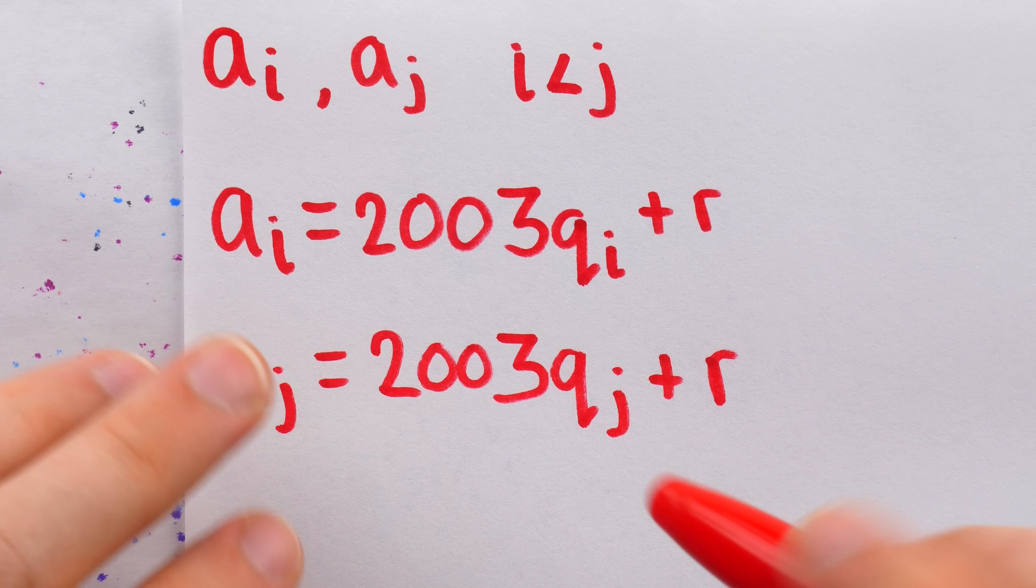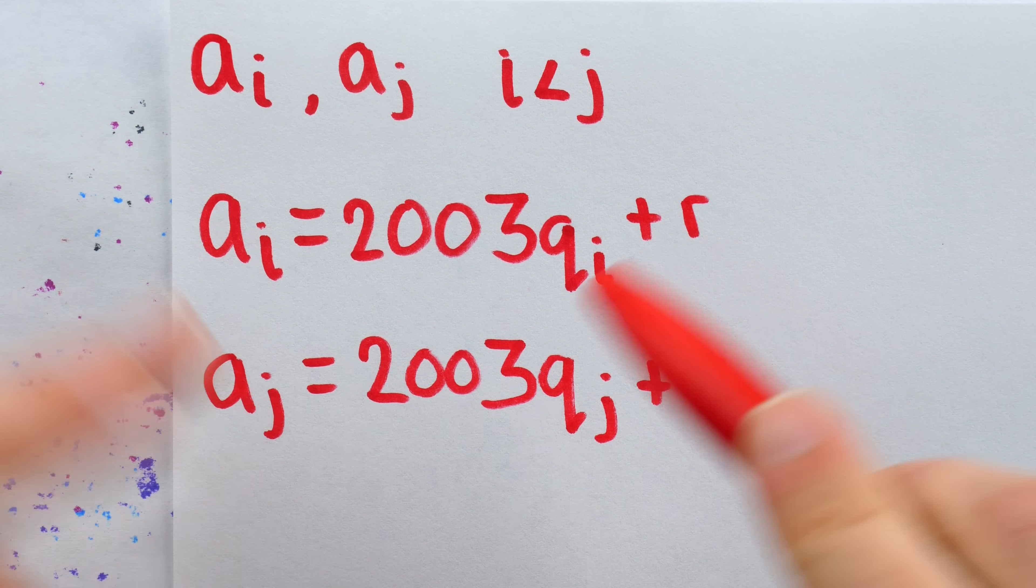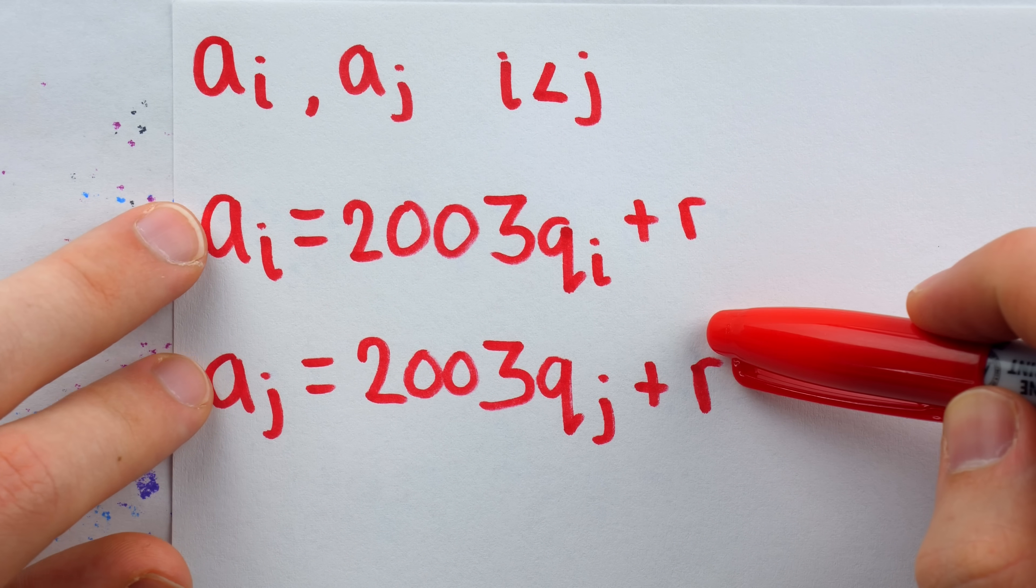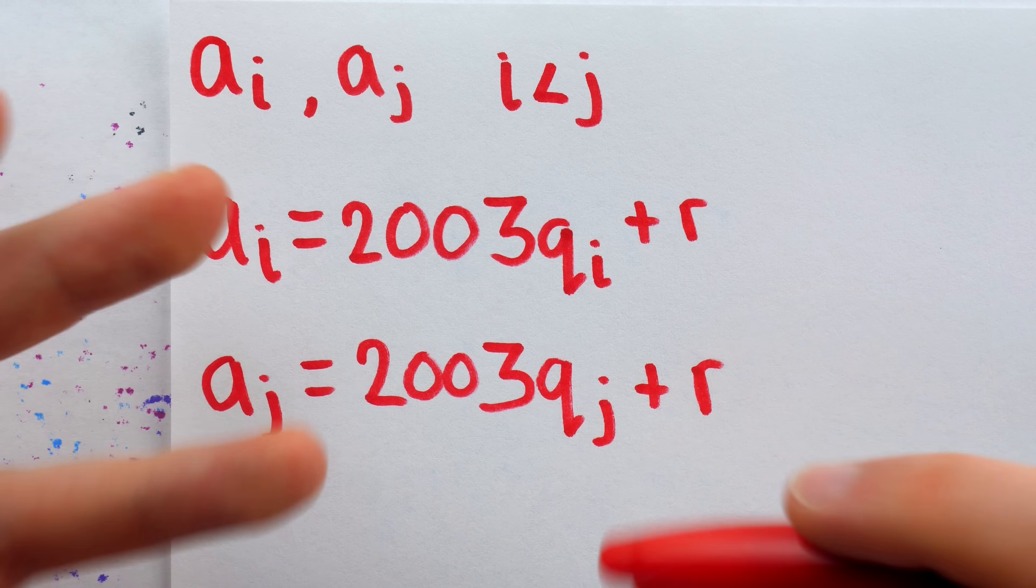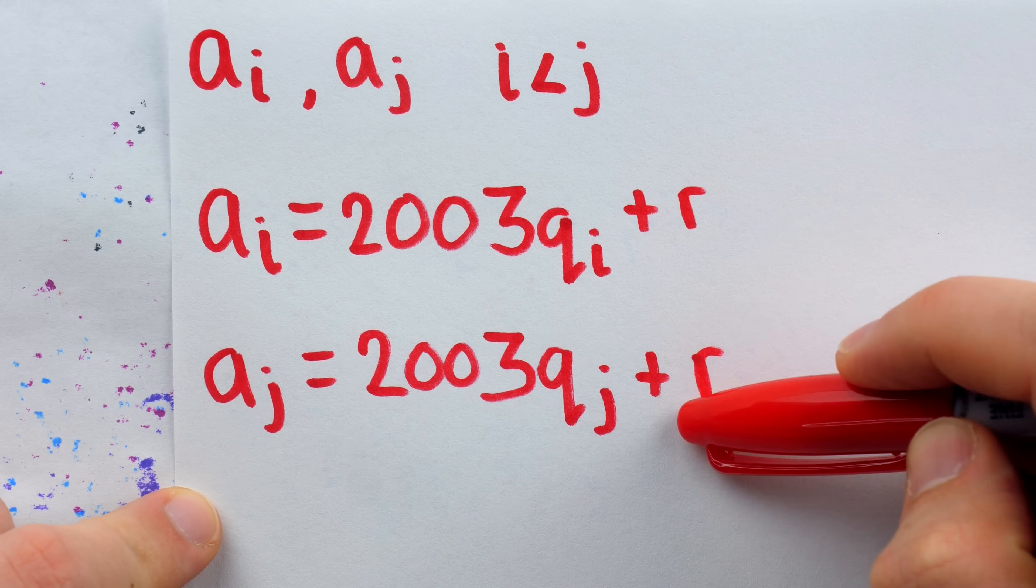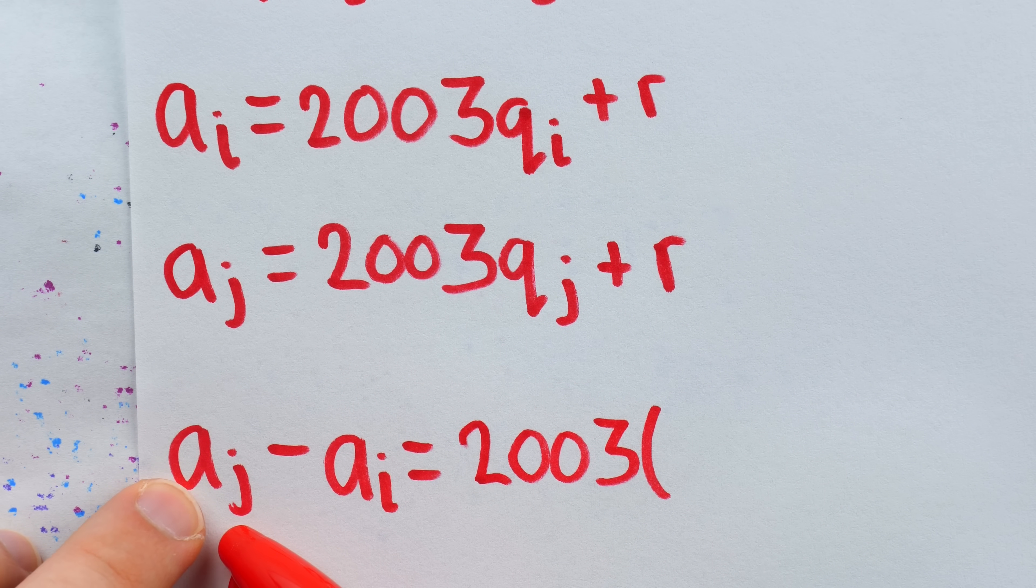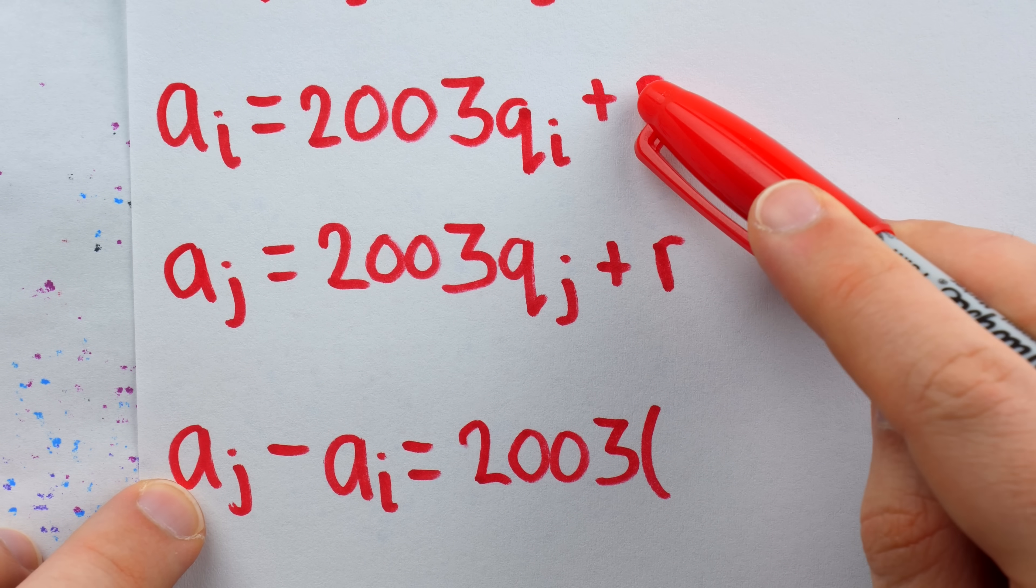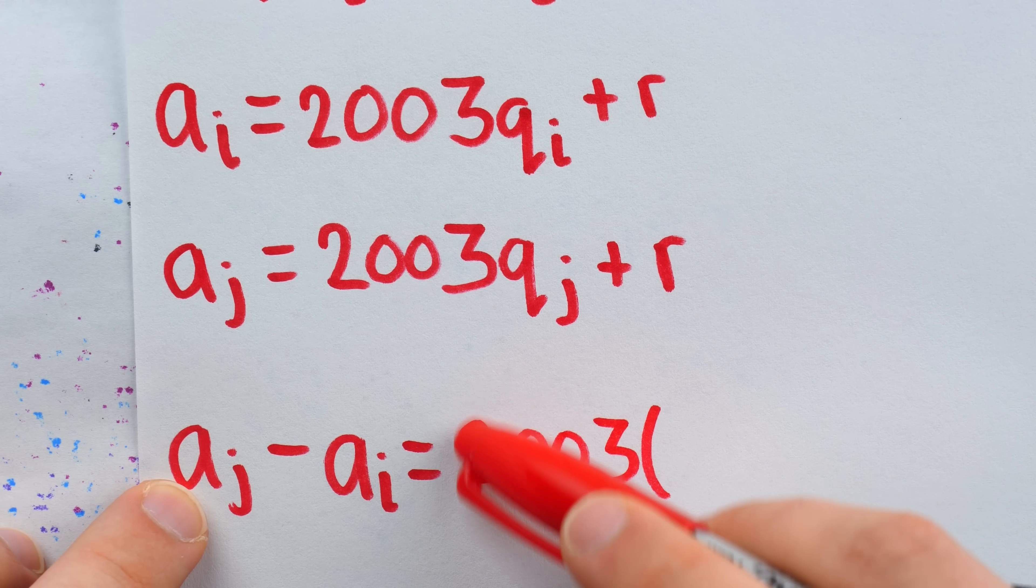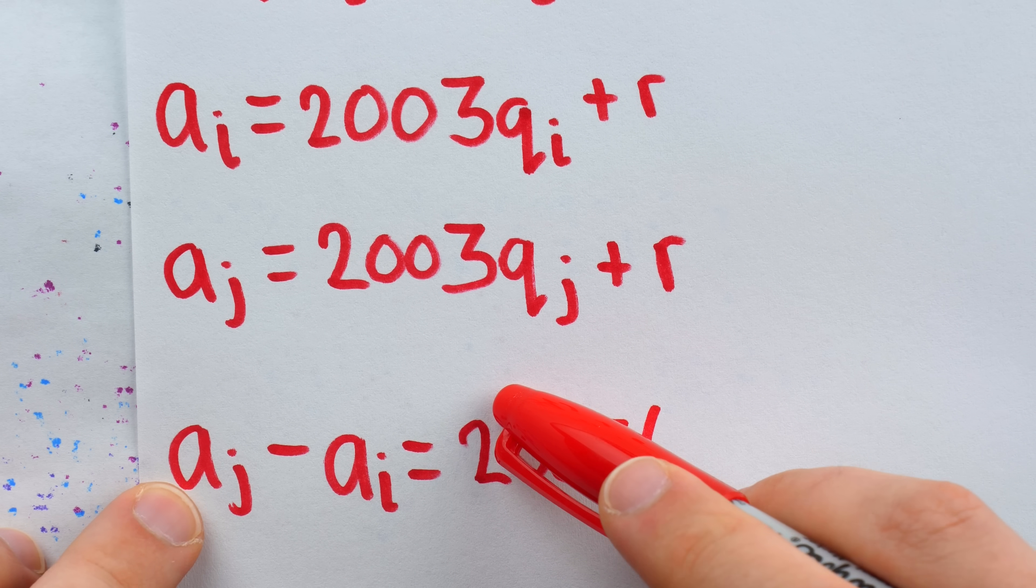Now remember, we're trying to show that our sequence has a term that's divisible by 2003. Here, we immediately see a chance to create something that's divisible by 2003, which is to subtract these two terms. If we subtract A_i from A_j, the remainders cancel out. It's R minus R. What's left is just a bunch of copies of 2003.